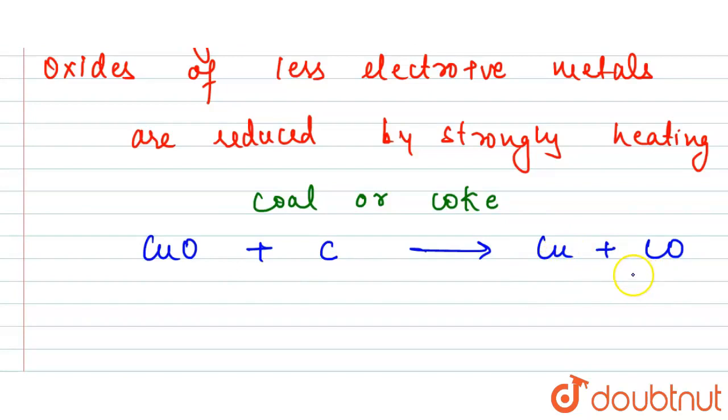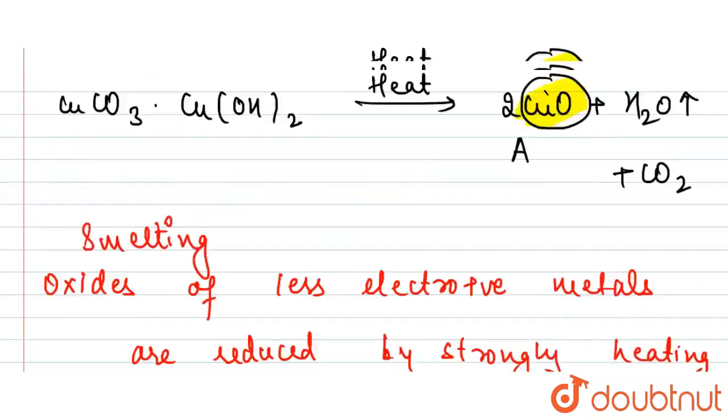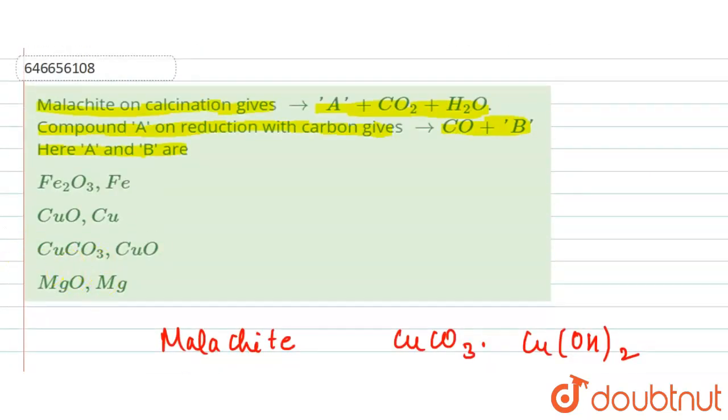It means that our B is copper. So our answer is: A is CuO and B is copper. Thank you.